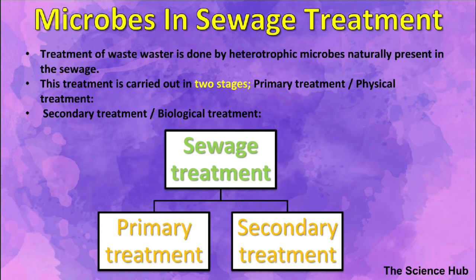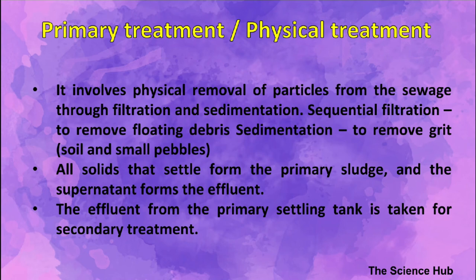Sewage treatment is done in two stages: primary and secondary. In primary treatment, floating debris is removed by sequential filtration; grit such as soil and small pebbles are removed by sedimentation. All solids that settle form primary sludge, and the supernatant forms the effluent.